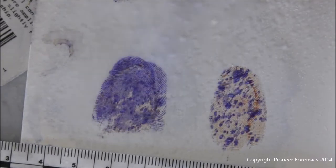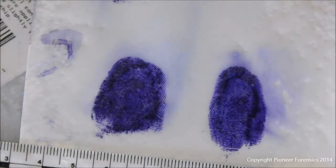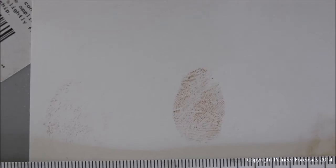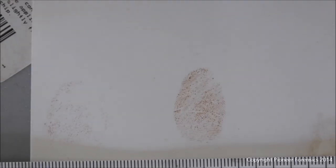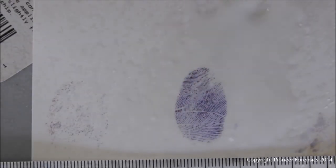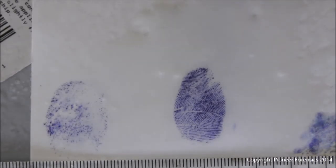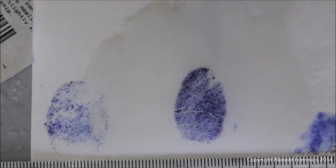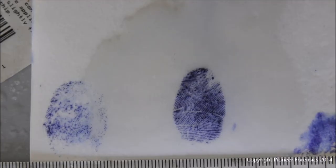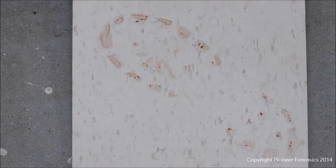Welcome to the Pioneer Forensics channel. In this video we're going to look at the use and application of Leukocrystal Violet. Leukocrystal Violet is a blood reagent suitable for both laboratory work and examinations, and probably its best use is applications at the crime scene or in the field.